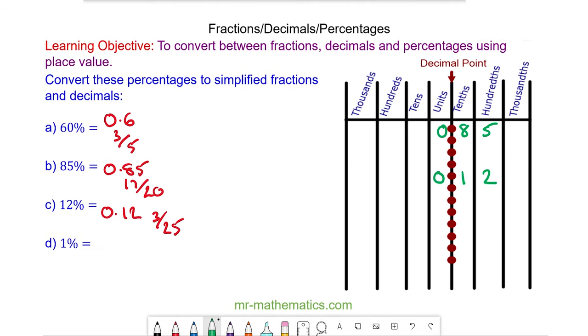And finally for question d, 1% is 1/100, which is no units, no tenths, one hundredth. As a decimal, 0.01. And it cannot be simplified any further, so again, 1/100.